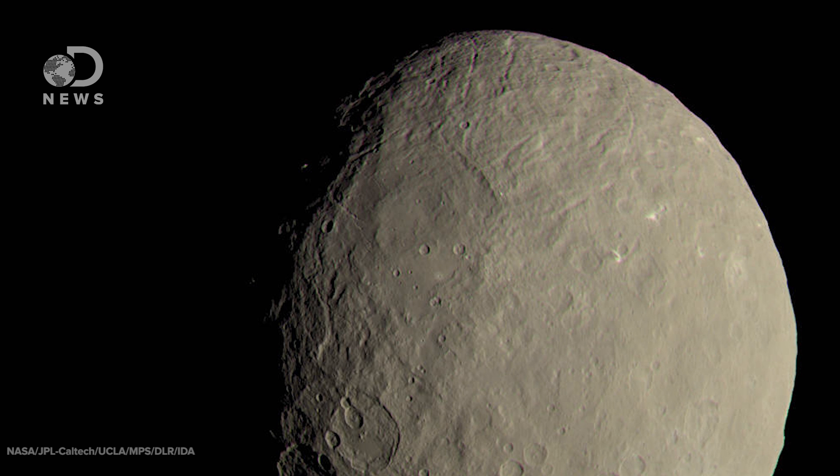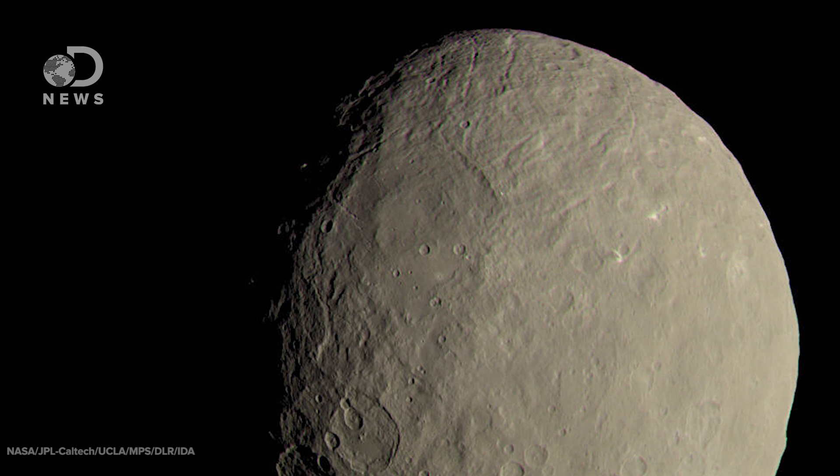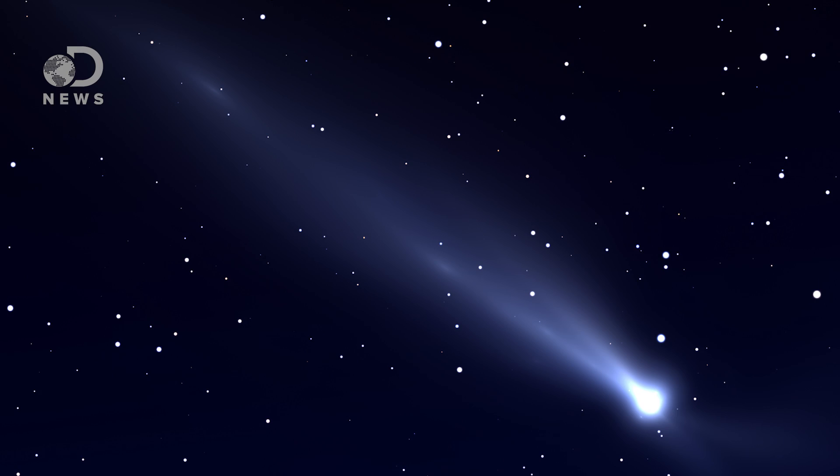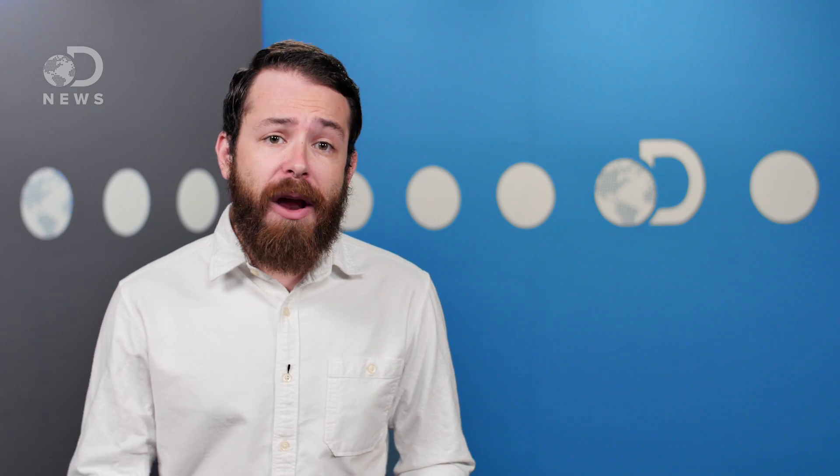So, how do scientists know that these materials originated on Ceres and didn't come from, say, an asteroid or comet impact? Well, the areas where they found the organic materials also contain other substances that are endogenous,